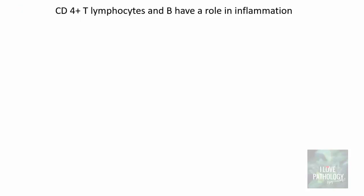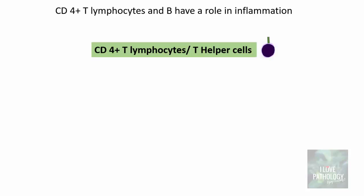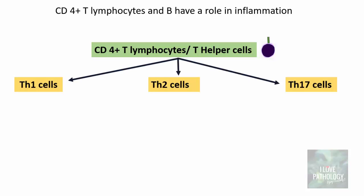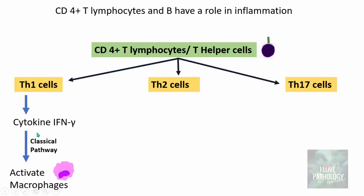What type of lymphocytes have a role in inflammation? It is the CD4 positive T lymphocytes and B cells. CD4 positive T lymphocytes are also called T helper cells, and there are three different types: TH1, TH2, and TH17 cells. TH1 cells secrete the cytokine interferon gamma, which activates macrophages via the classical pathway — these macrophages are pro-inflammatory in nature.